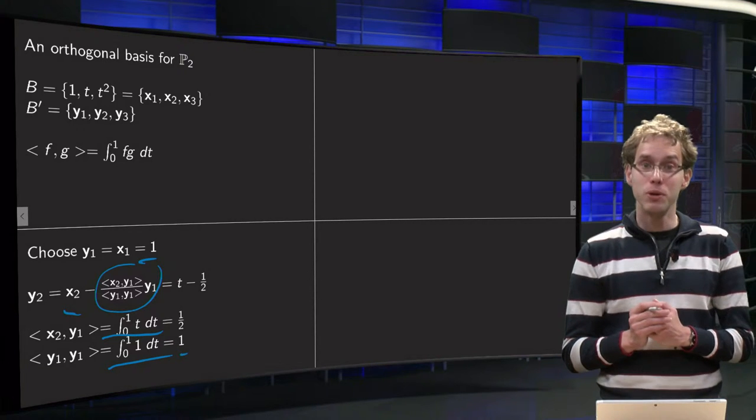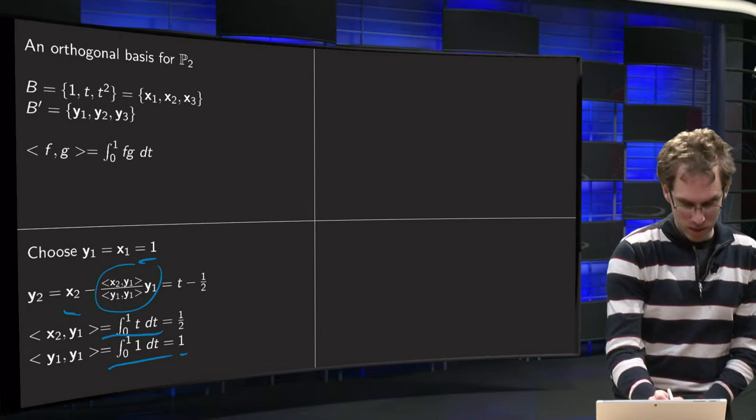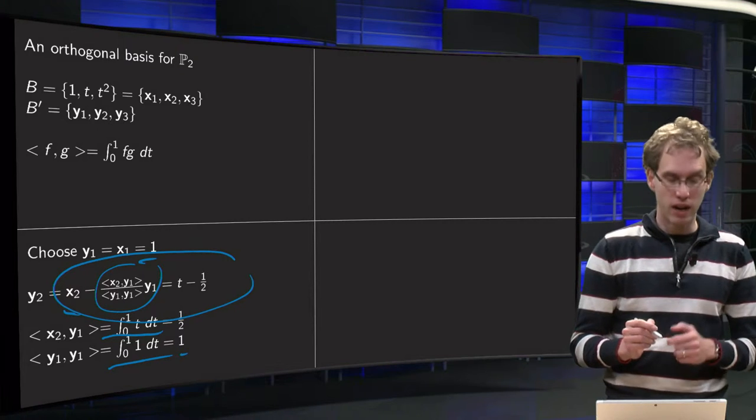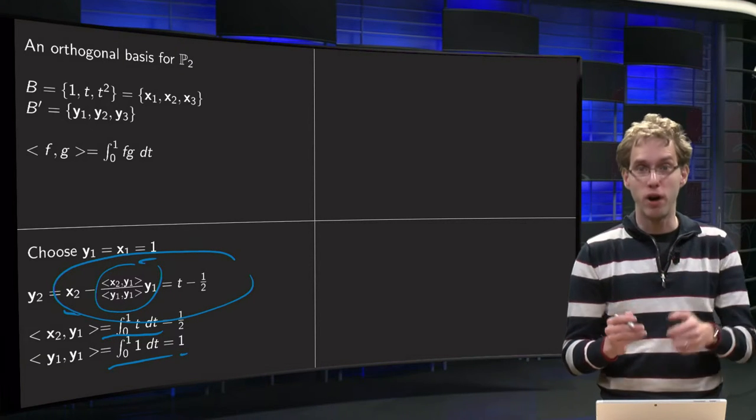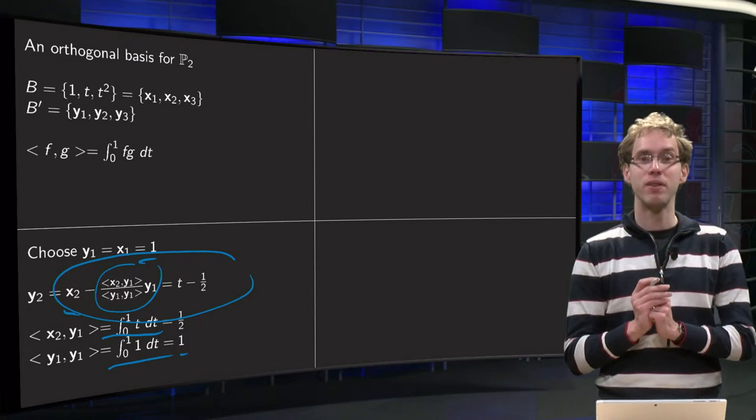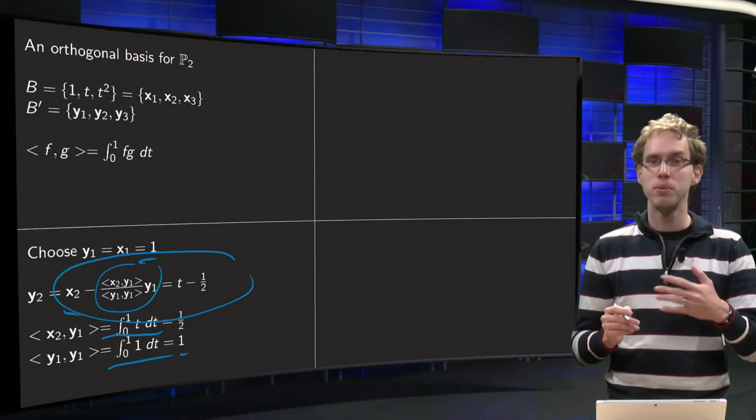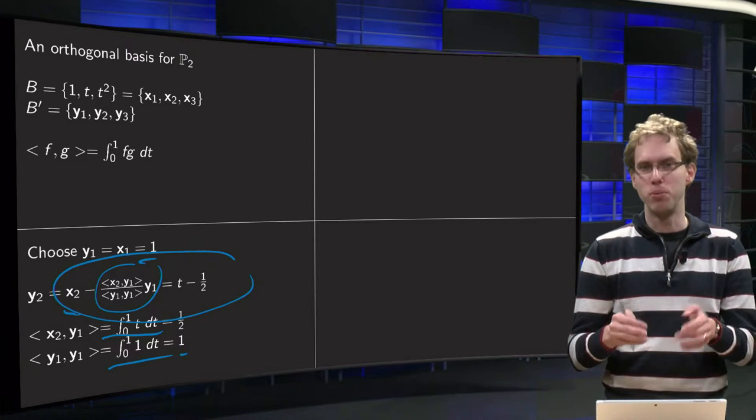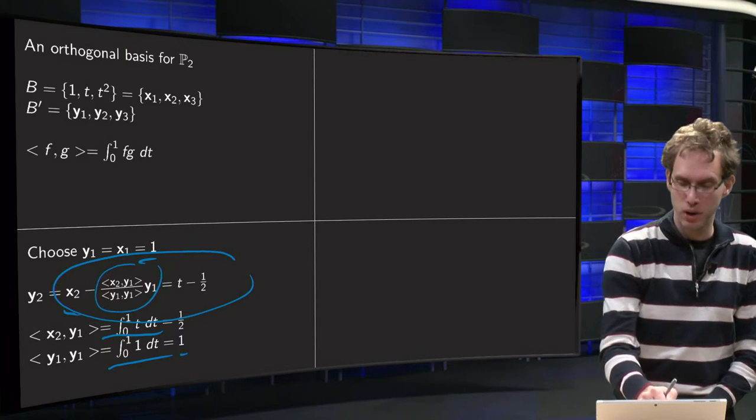And then we can compute our y2, just plug in the numbers in the formula. So you have your x2, which is t, minus x2, y1 over y1, y1, minus one half over 1, so one half times y1, which is 1, so we get t minus one half. And there we have our y2. If you are doing Gram-Schmidt, by the way, always check after your computation whether you really have an orthogonal basis. So just compute to check y1 inner product y2, just to check whether this is indeed correct.